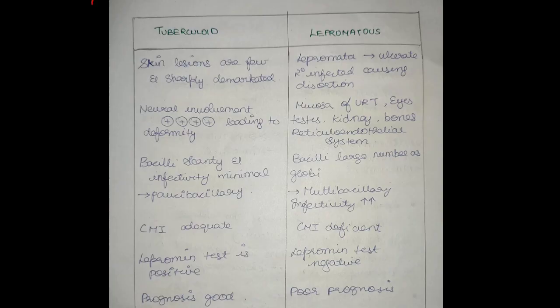We have to know the difference between tuberculoid type and lepromatous type. Skin lesions in tuberculoid type are few or single, sharply demarcated skin lesions with no nodules.